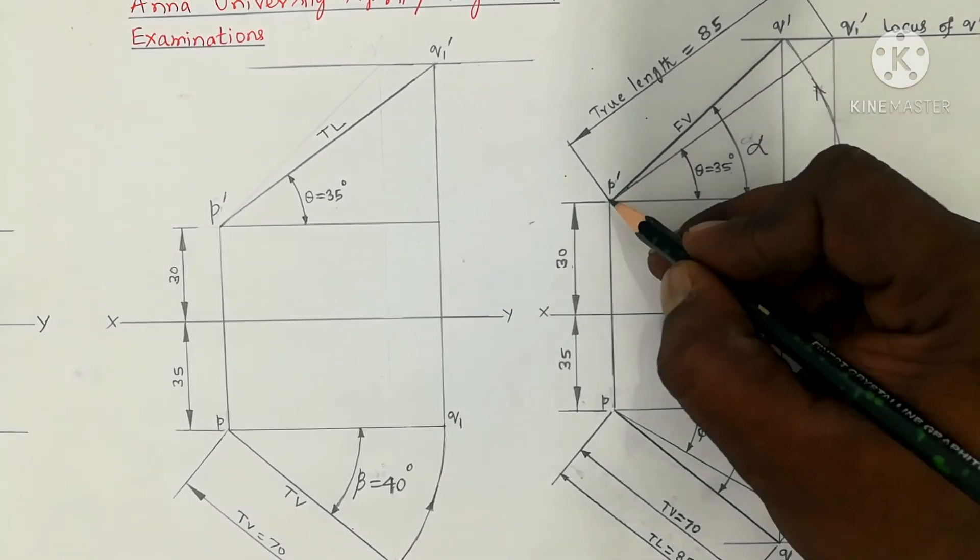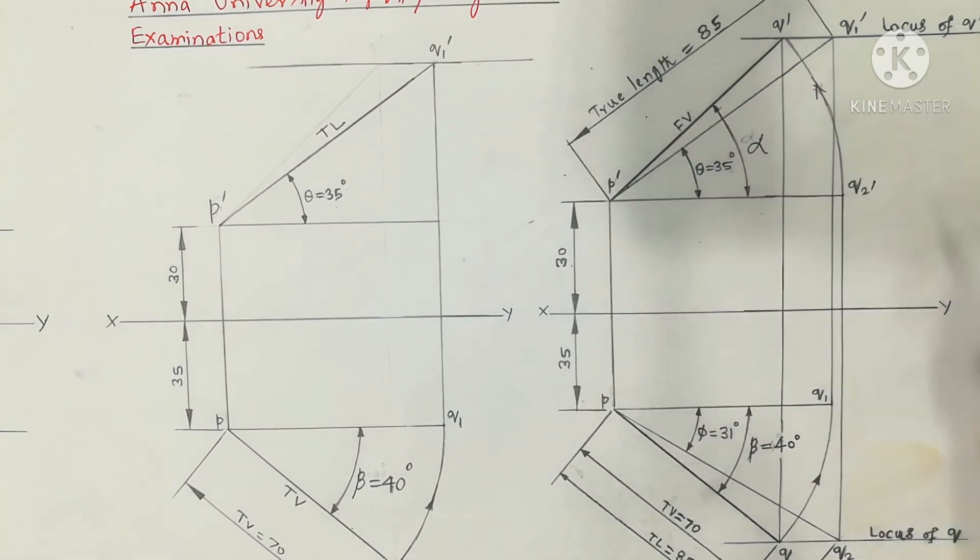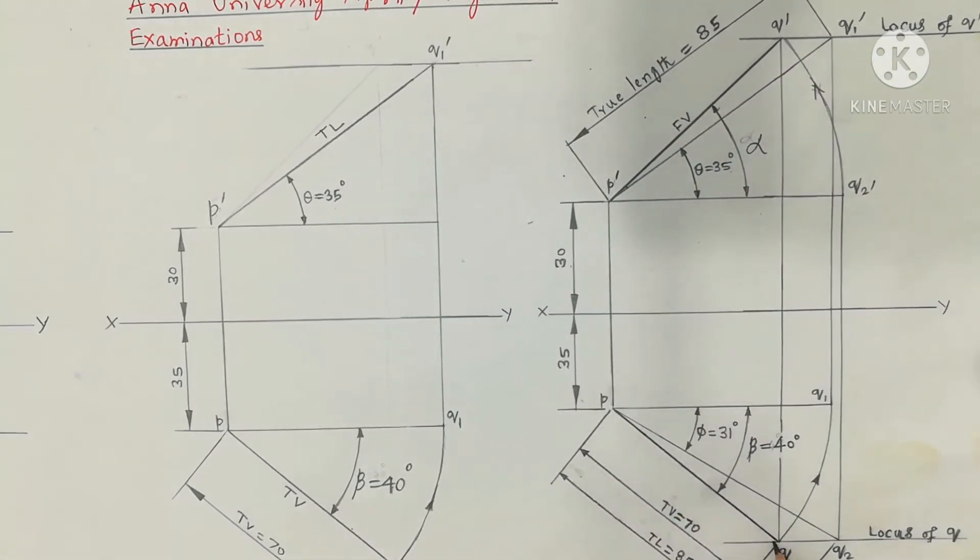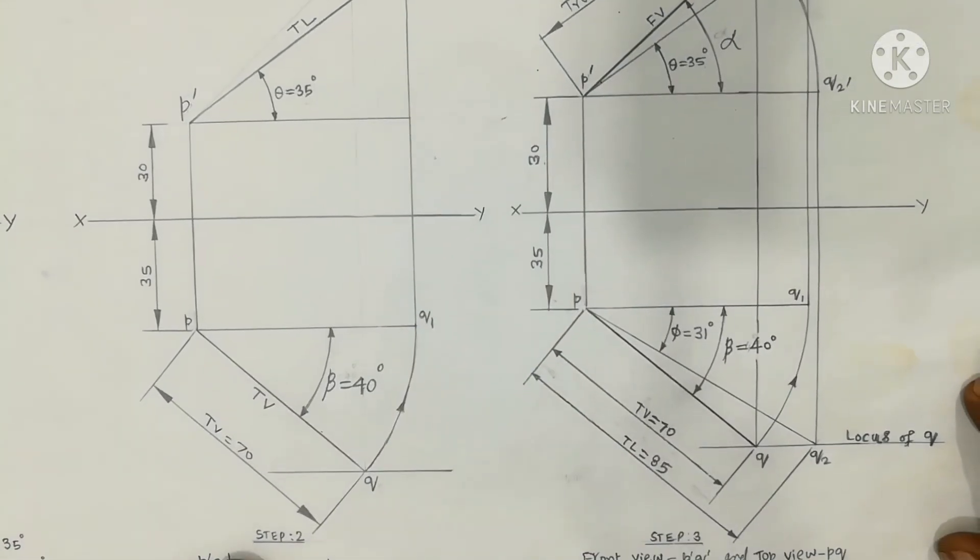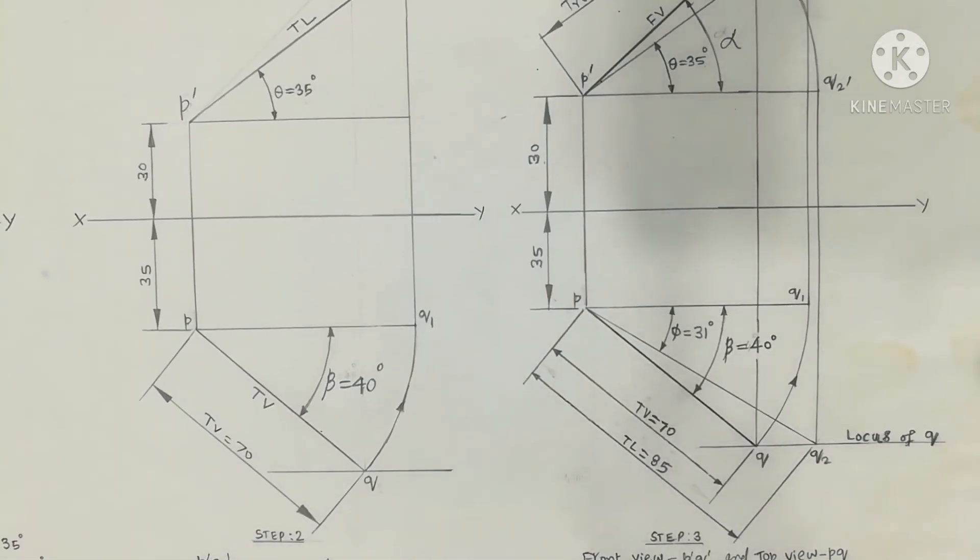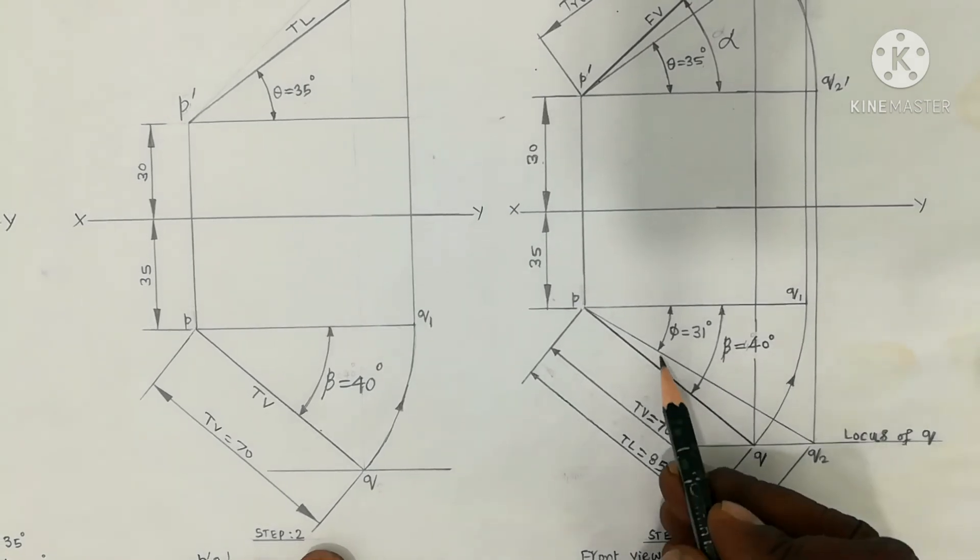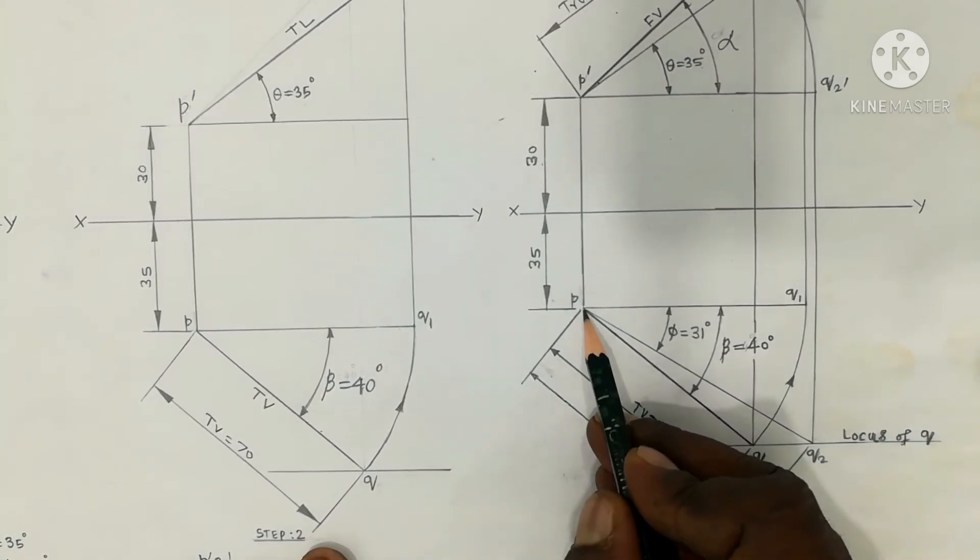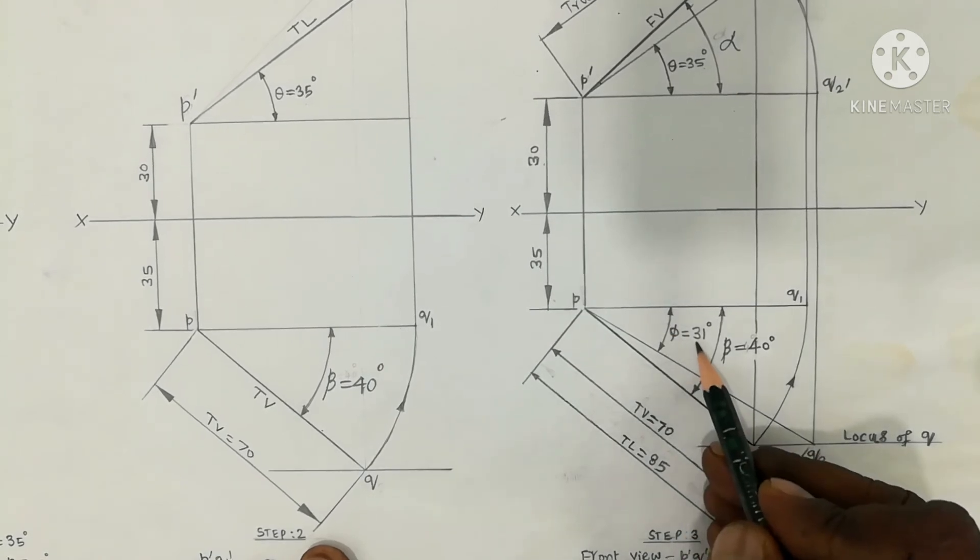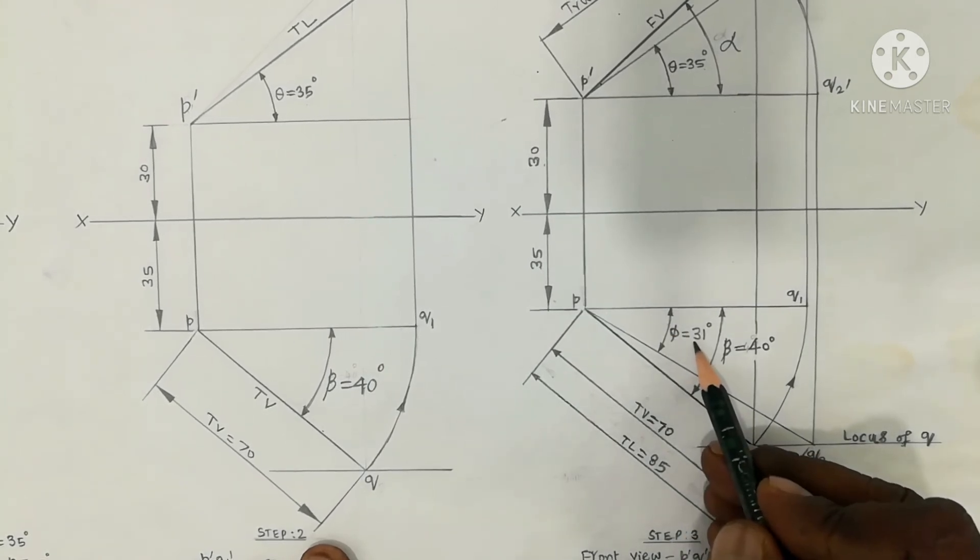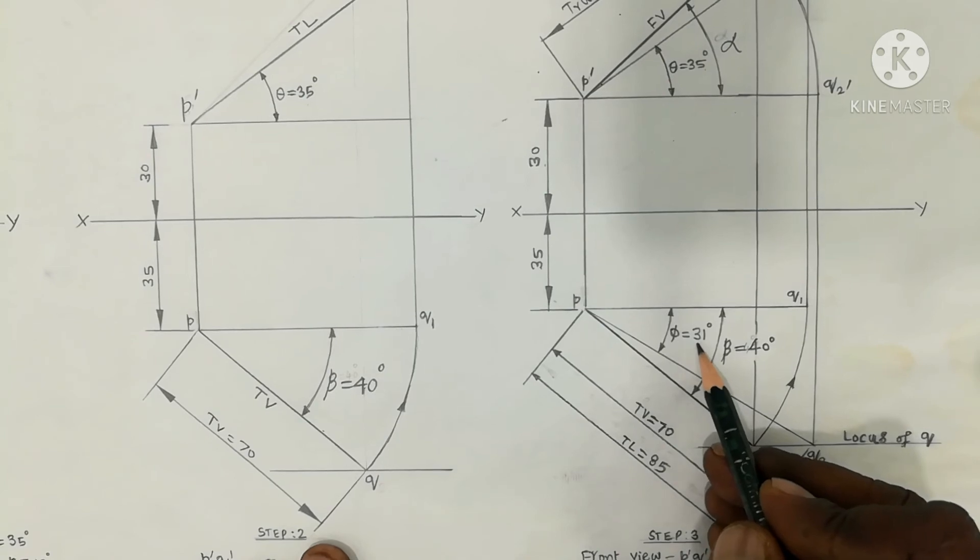Joint P dash and Q dash is the final front view. Joint PQ is the final top view. So question on the inclination with VP. Inclination with VP is the angle. This is the true inclination with VP, so phi is the notation. P Q2 triangle measure, it is measured as 31 degree. So 31 degree is the answer, inclination with VP. Understand?